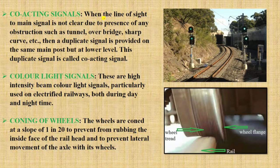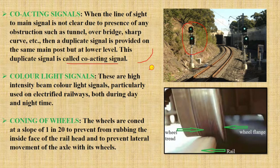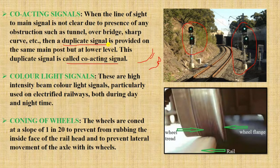Next, co-acting signals. When the line of sight to the main signal is not clear due to the presence of any obstruction such as a tunnel or overbridge, a duplicate signal is provided at another location showing the same indication. If a signal is located here but cannot be seen from a certain direction, another identical signal is placed where it can be seen. These are called co-acting signals or duplicate signals.